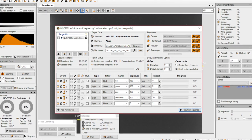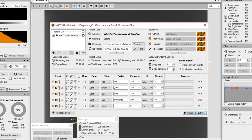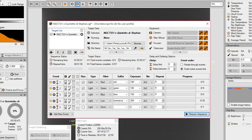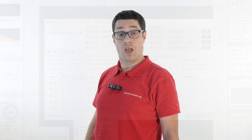Now Sequence Generator Pro performs the capture of images using the filters of our filter wheel, based on the sequence set by us, while the autoguider corrects any tracking error of the mount. Great!